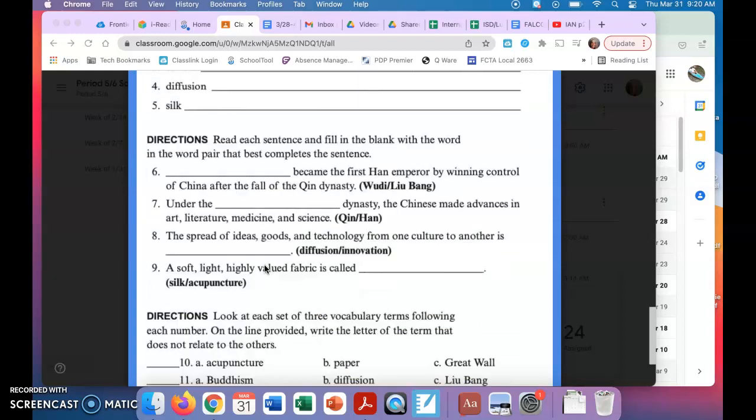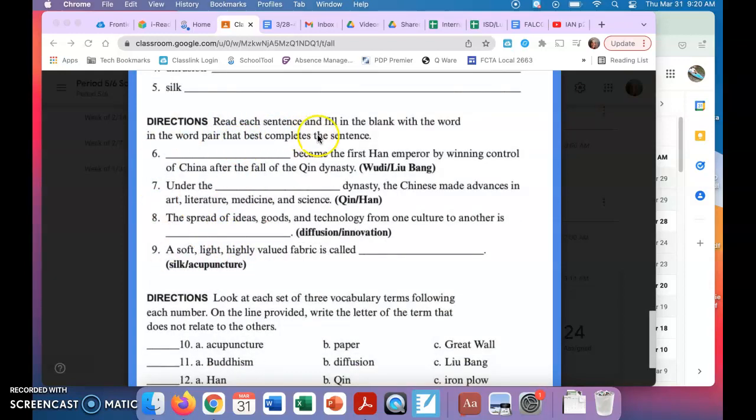The middle section here, you're going to read each sentence and fill in the blank with the word pair that best completes the sentence. So number six: blank became the first Han emperor by winning control of China after the fall of the Chin Dynasty. Was that Wu Di or Liu Bang?